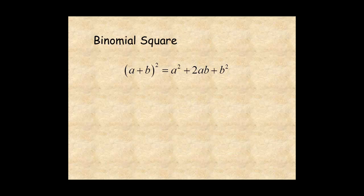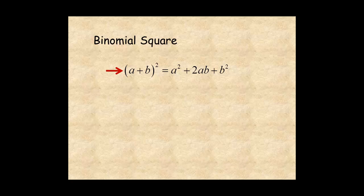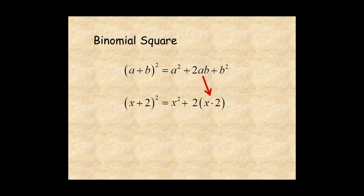Also, in a previous lesson, you learned about the shortcut for squaring a binomial. For example, to square x plus 2: square the first term to get x squared, plus 2 times the product of the two terms — 2 times x times 2 — plus the square of the second term, 2 squared, for x squared plus 4x plus 4.